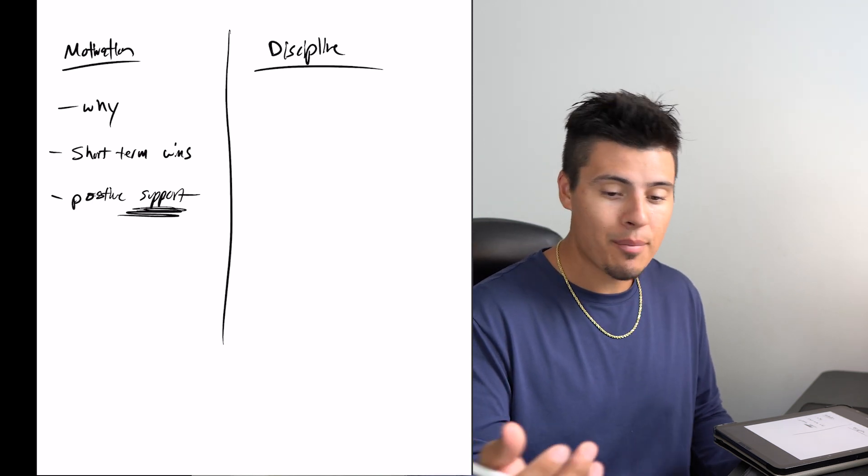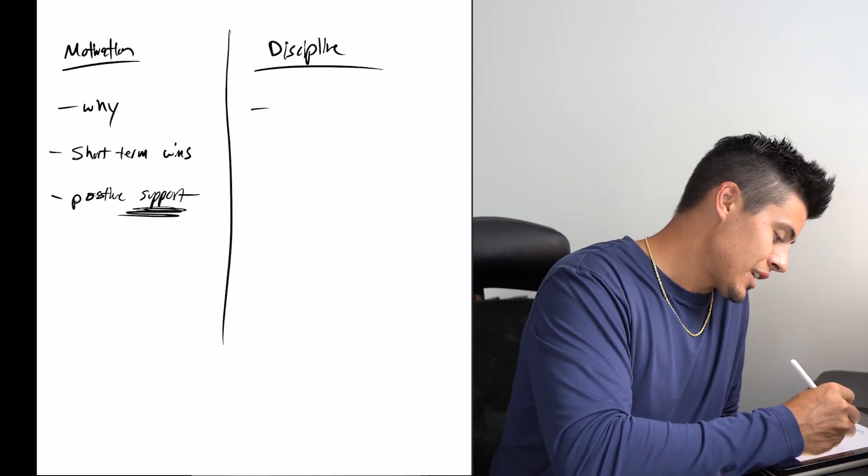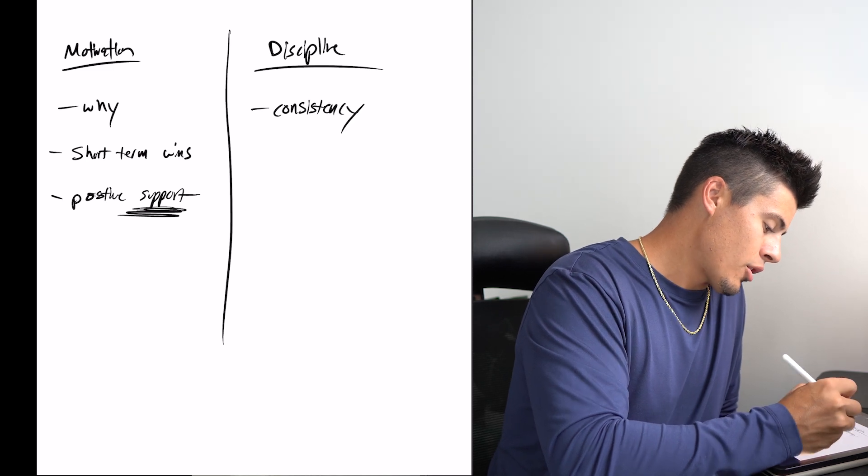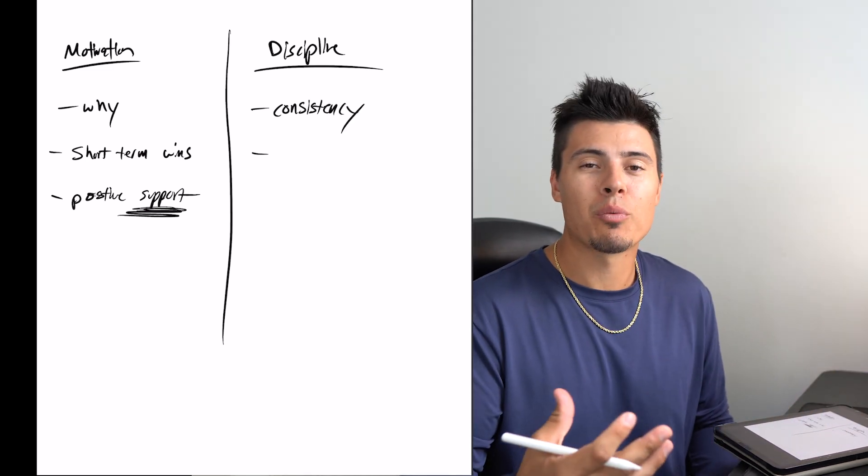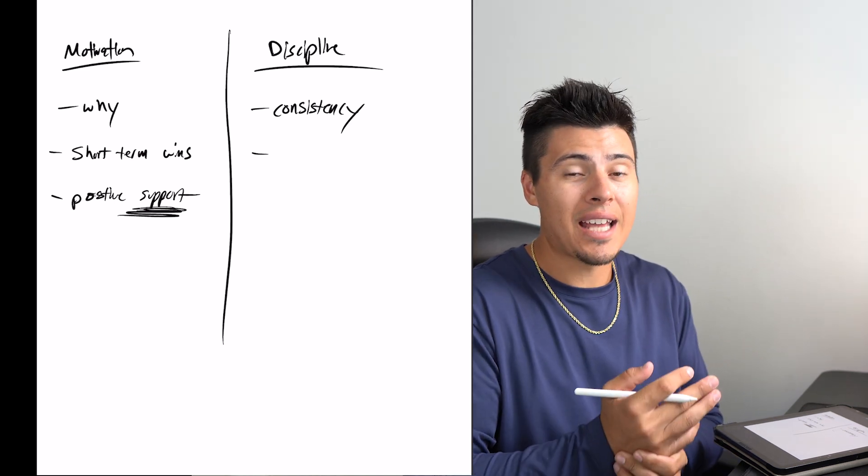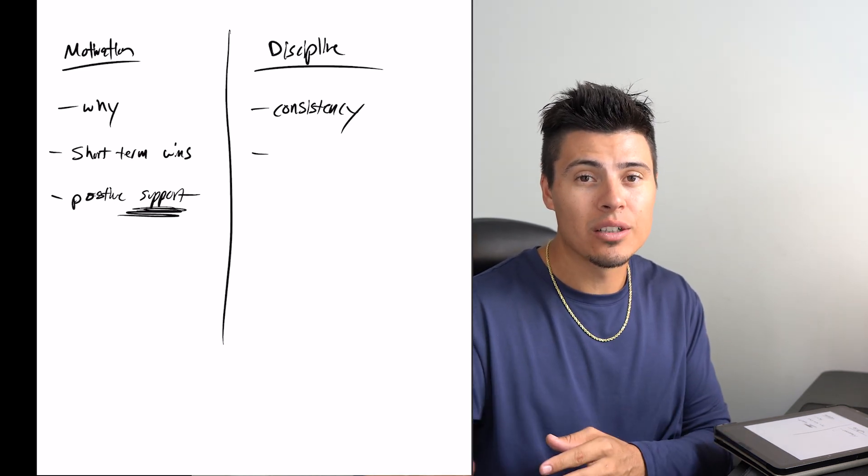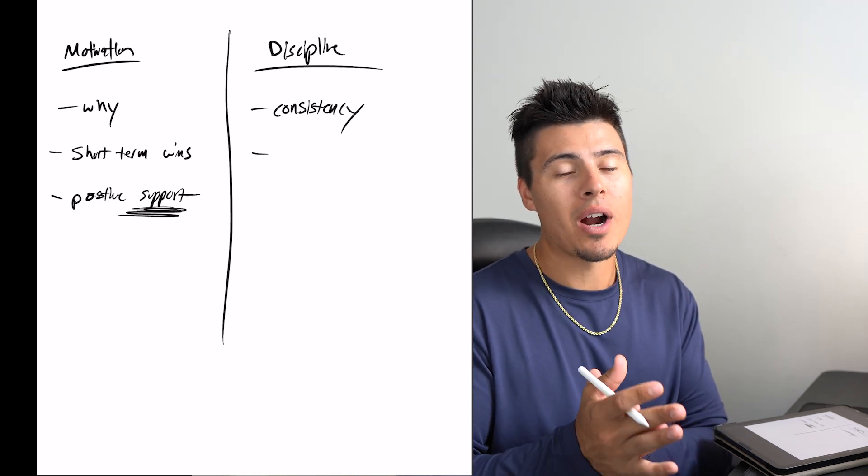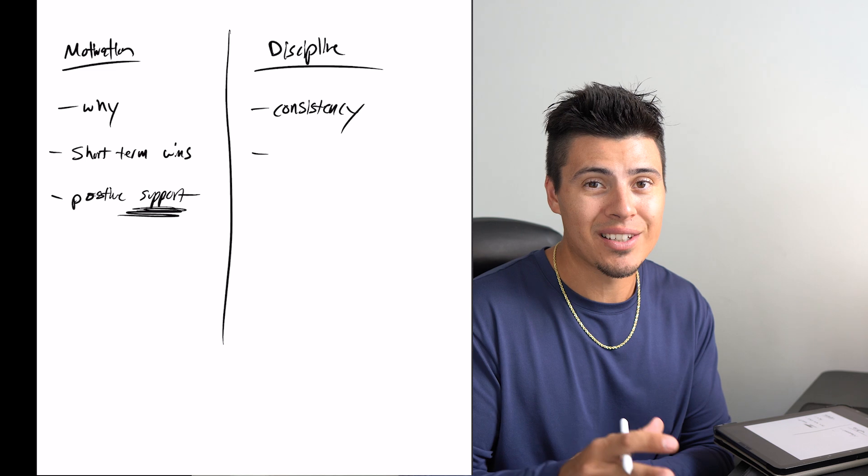Next we want to talk about the discipline. The discipline, this is the area where we have that consistency. We want to make sure that we're consistent with our efforts to ensure that we have the discipline to actually just keep moving the needle forward. This is probably the most important area where I feel like a lot of high school baseball players get it wrong.